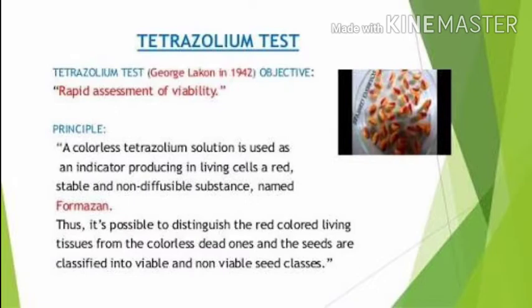In order to assess seed viability in a quick way, the tetrazoleum test comes into the picture. Before conducting the tetrazoleum test, the seeds are soaked in water for nearly 6 to 18 hours so that the testa seed coat layer comes off. In the case of wheat, the seed is bisected longitudinally.